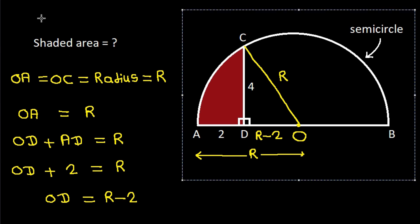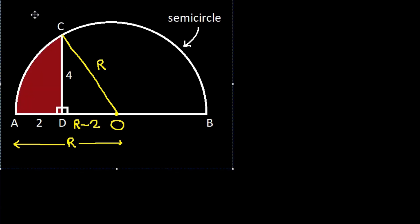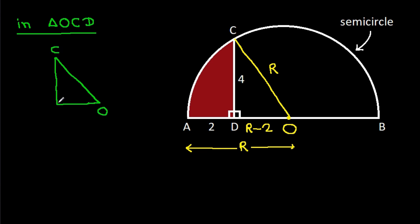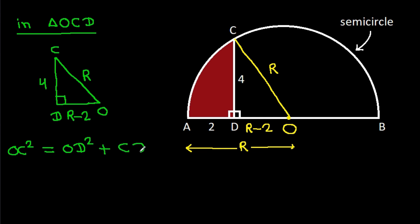Since OD is R minus 2, the angle OCD is 90 degrees. CD is 4, OD is R minus 2, and OC is R. By the Pythagorean theorem, OC squared equals OD squared plus CD squared.